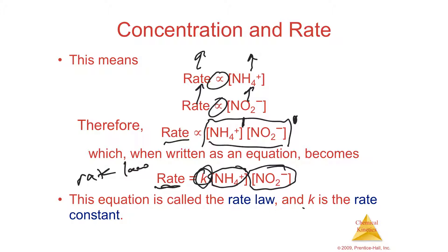The K is called the rate constant — it's simply a number, a constant of proportionality. It's whatever value makes the math work: K times the concentration of reactant one times the concentration of reactant two equals the rate. It will always be the same for this particular reaction. The rate law is very useful for finding out how fast something may happen, though it takes practice to understand.